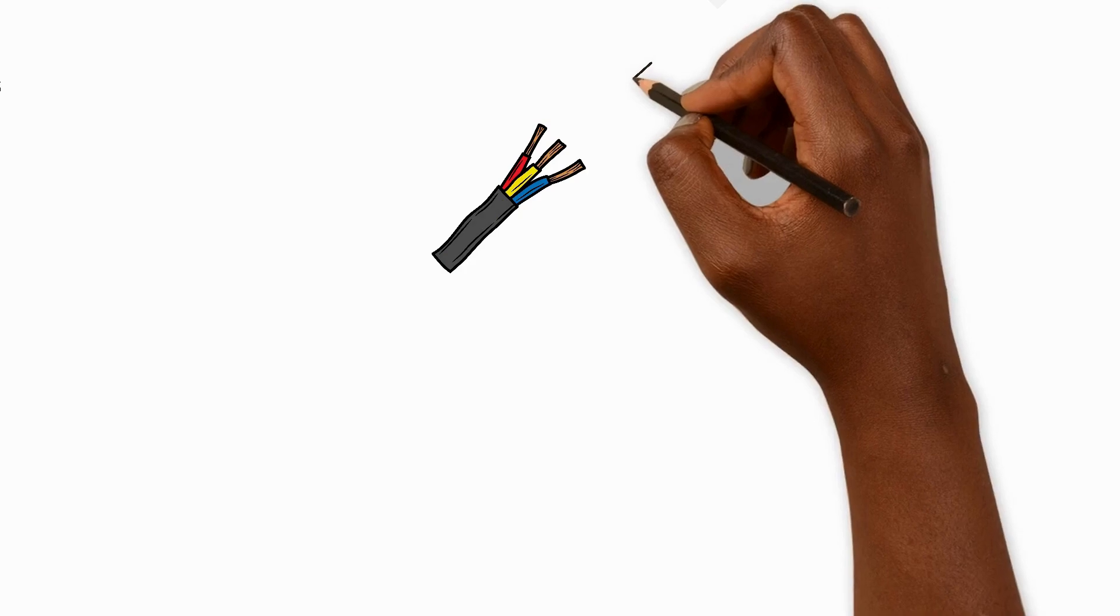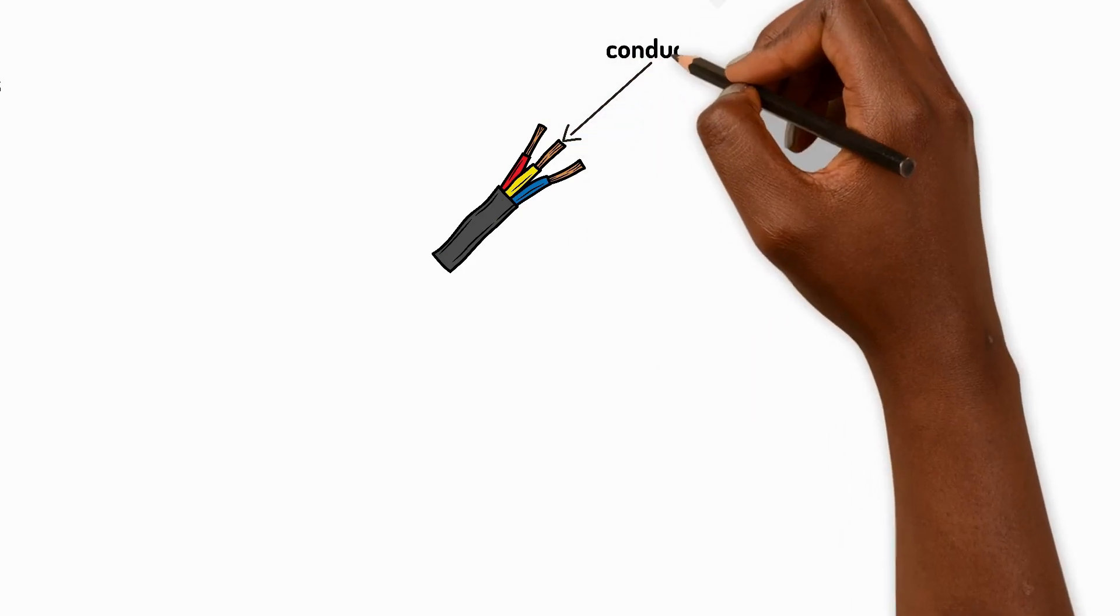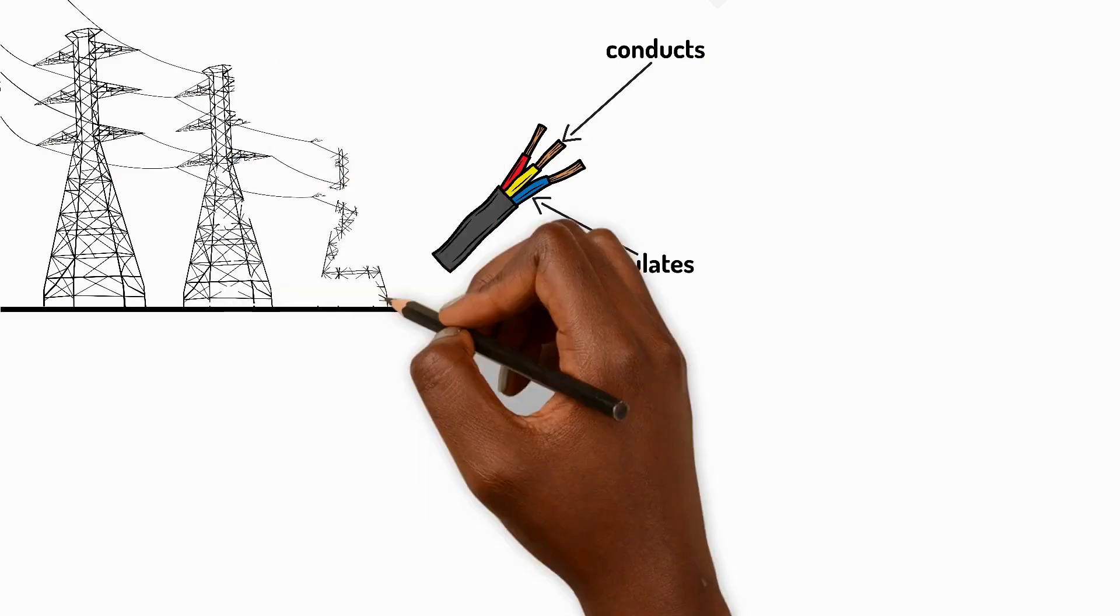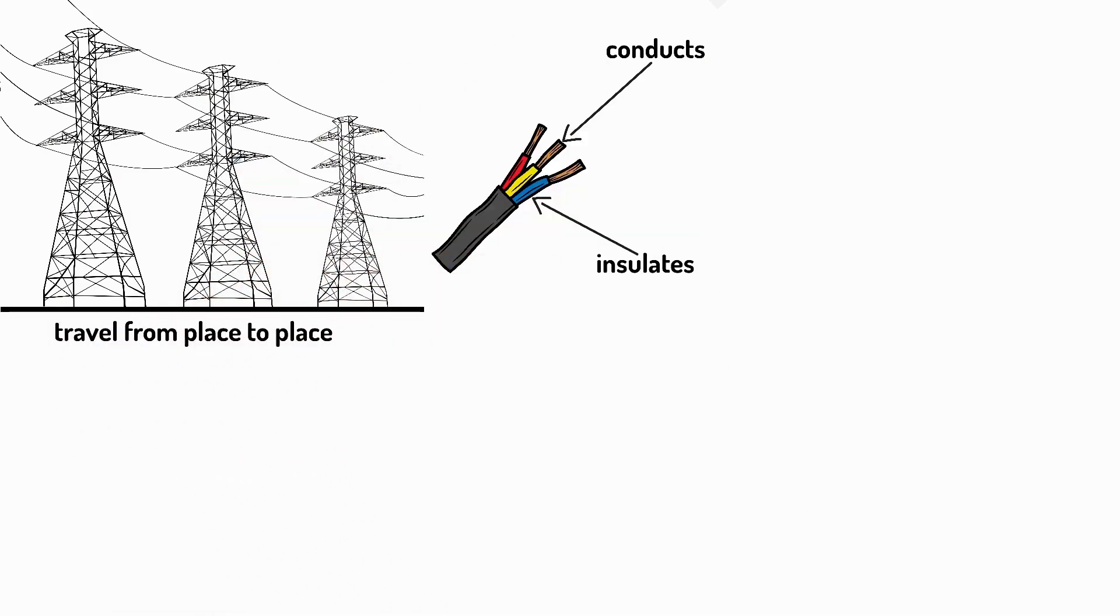Look inside an electrical wire. The metal core conducts electricity while the plastic coating insulates it. This combination lets electricity travel safely from place to place without escaping.